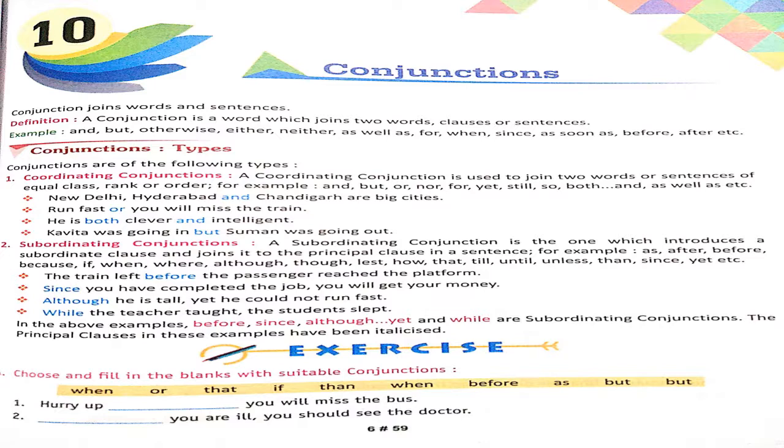And the second one is subordinating conjunctions. A subordinating conjunction is the one which introduces a subordinate clause and joins it to the principal clause. For example: as, after, before.